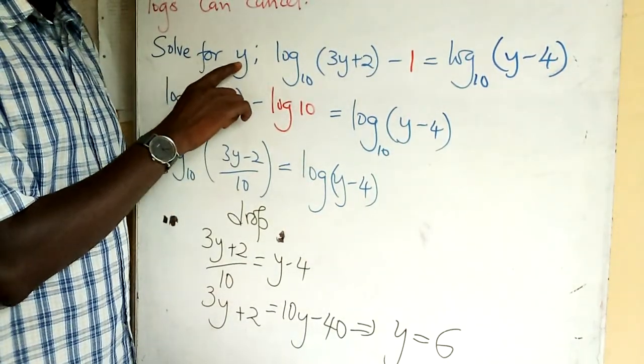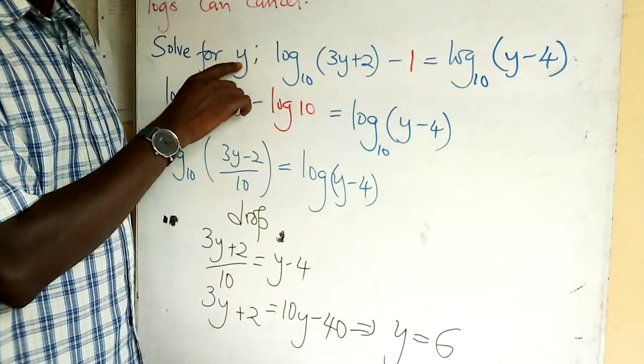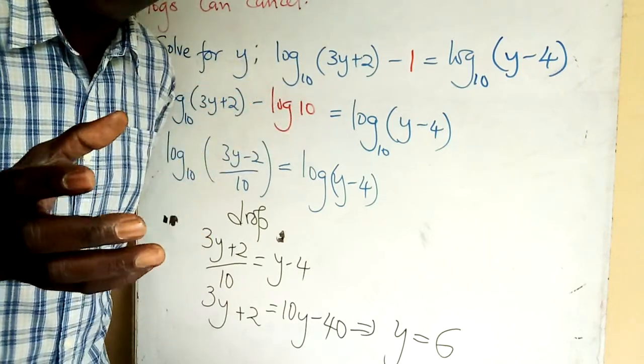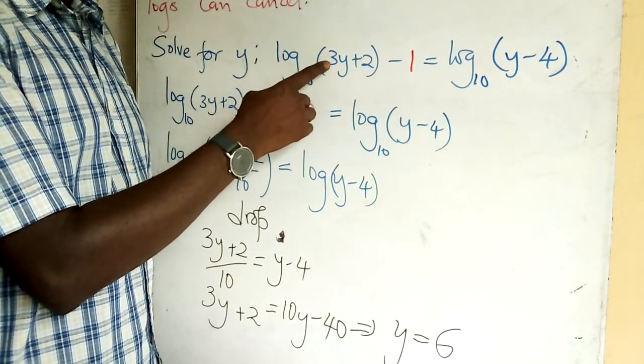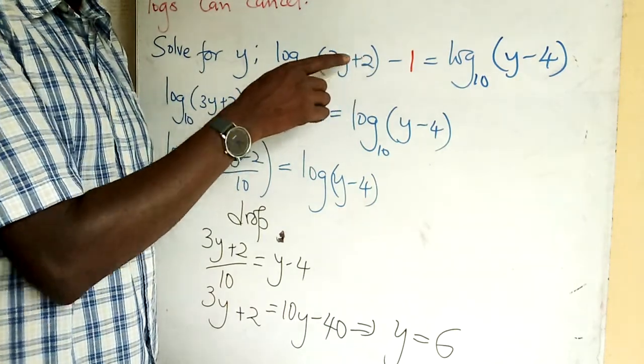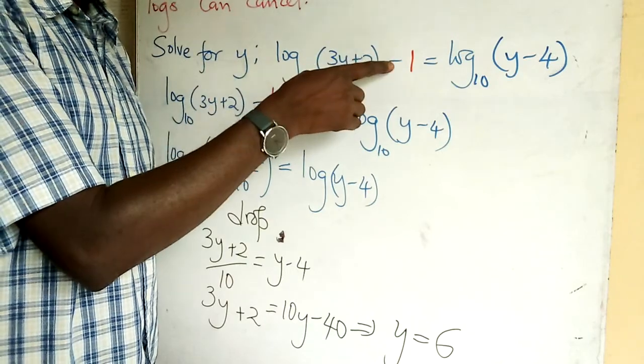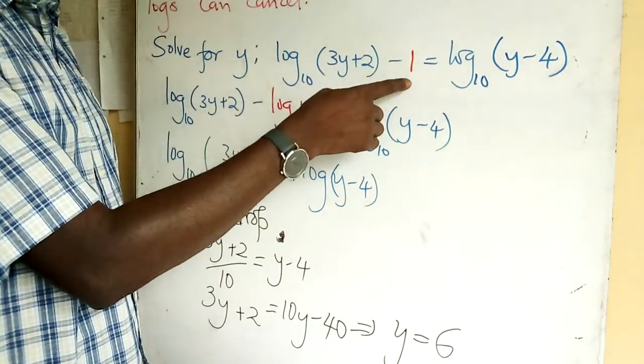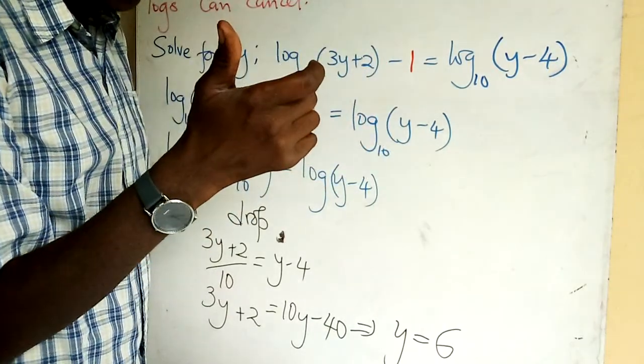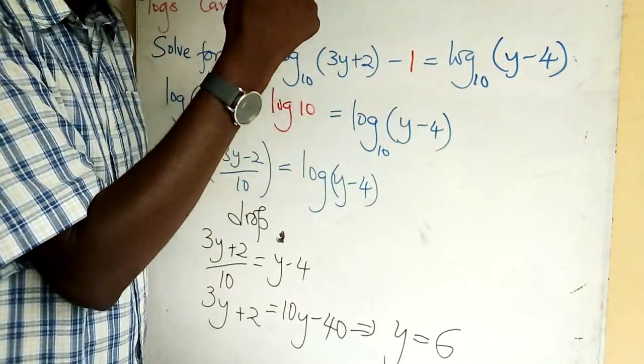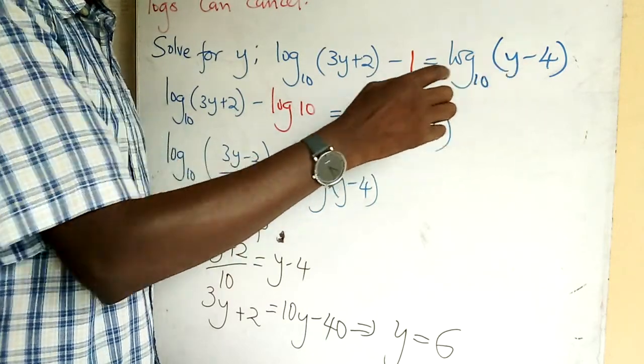Log base 10 of (3y + 2) minus 1. See, 1 - I'll put it in red. Does it click anything in the red I'd written? Yes. Equals log base 10 of (y - 4).